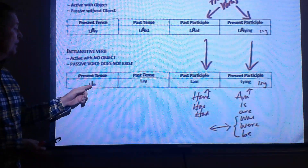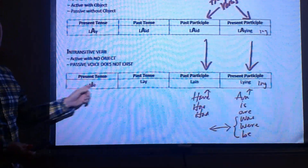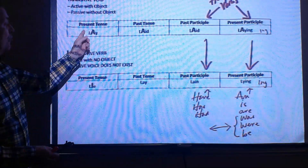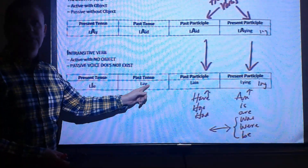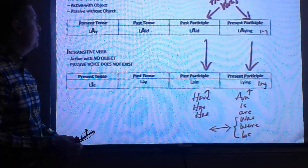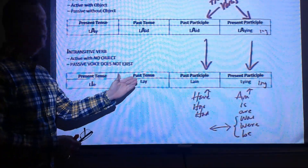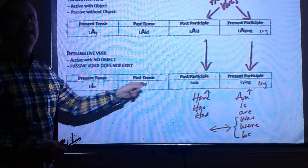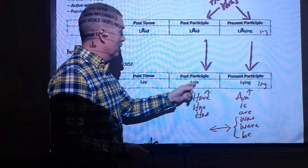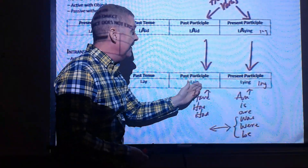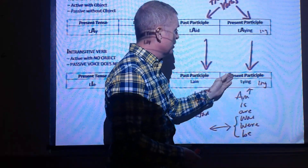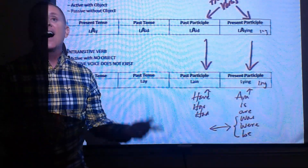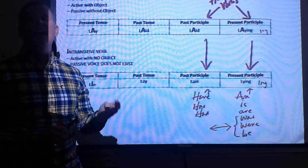A helpful mnemonic: the intransitive verb begins with 'i' — lie (l-i-e). For the transitive verb lay, the letter 'a' appears throughout all its forms: lay / laid / laid / laying. For the intransitive verb lie: lie / lay / lain / lying. The past participle takes a helping verb (have/has/had), and the present participle adds -ing.